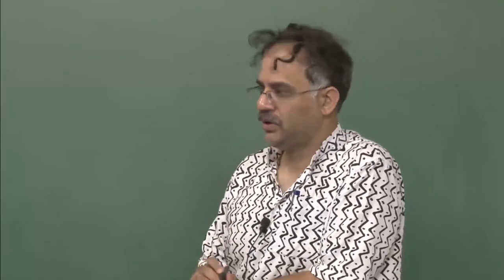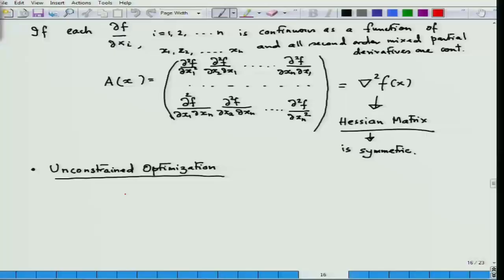Today we are going to concentrate on unconstrained optimization. That is, we are going to look at minimizing f(x), where x is in R^n, the whole of R^n. Now, what are the two aspects of this problem?